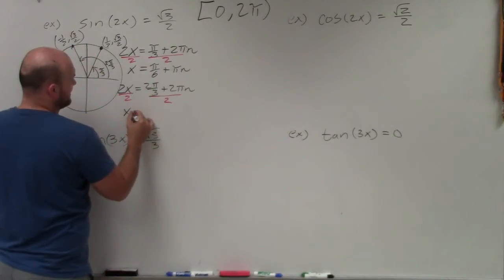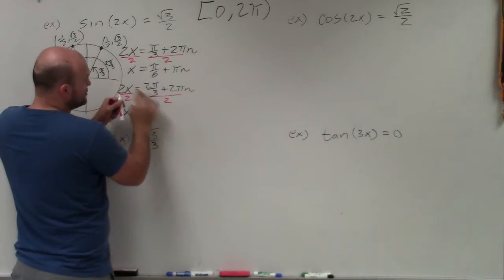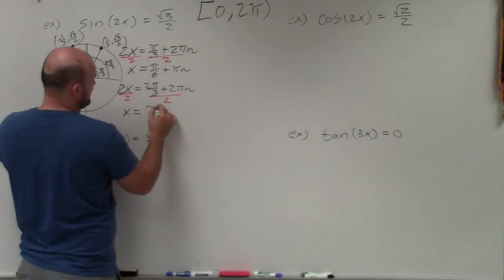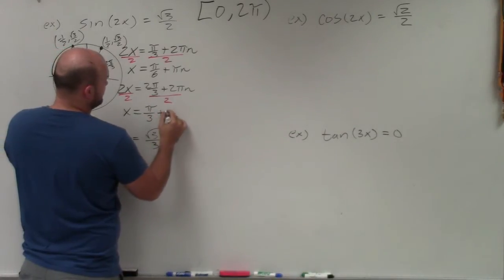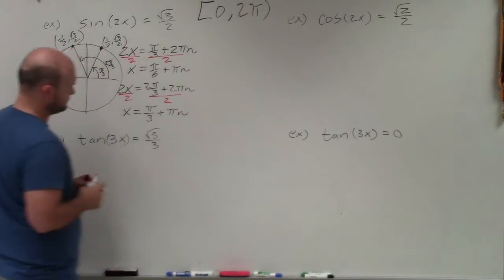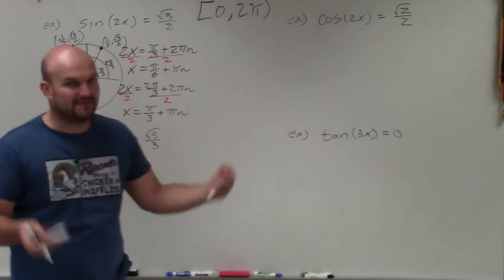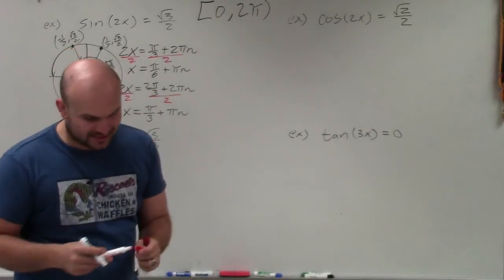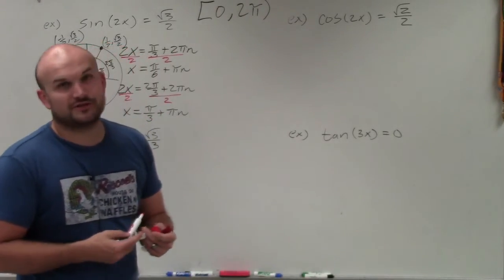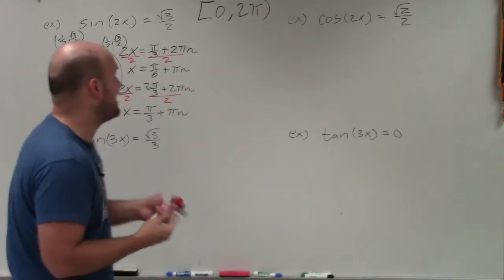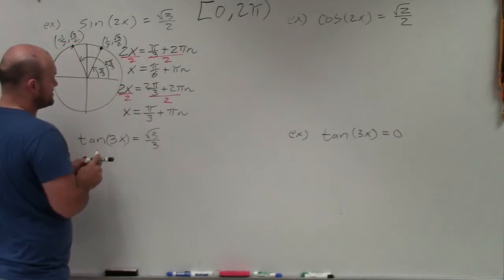For the second equation, dividing by 2 gives x = π/3 + πn. We do a lot of this kind of work, and I know it trips up many students. It's really important to make sure you know how to divide and multiply fractions here. So those are our two solution families.